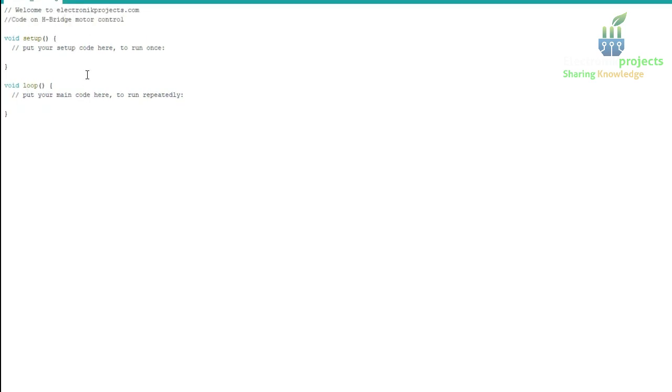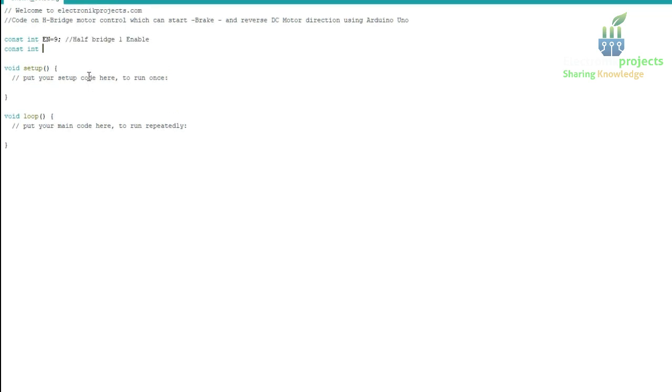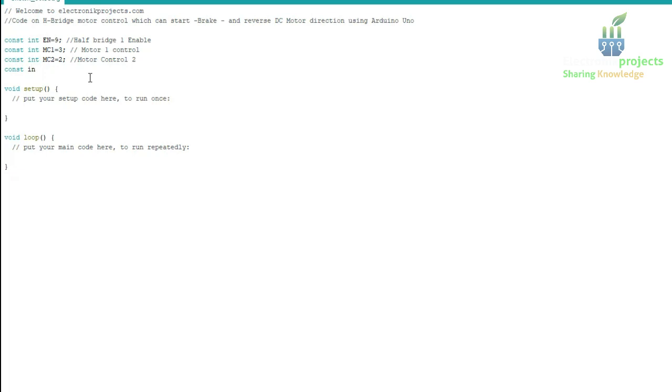And always disable the current flow before changing the state of the switches to ensure that a momentary short cannot be created as the switches flip. So we have to make sure when we write the code we have to write the code in such a way that we disable the current flow.